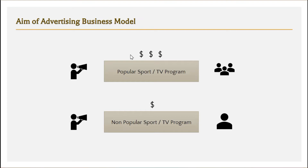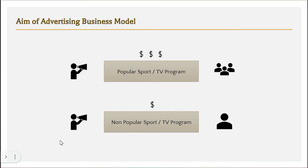If a marketer wants to run an ad during peak time when a popular sport event or TV program is happening, he has to pay a premium amount. On the other hand, if it is an unpopular program which nobody is interested in, the advertiser may have to pay less — or may not be interested at all because he cannot reach as many people. The aim is to create popular content so that more people come and watch, and the same principle holds true in the web space.